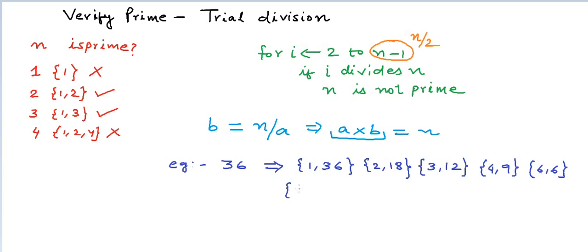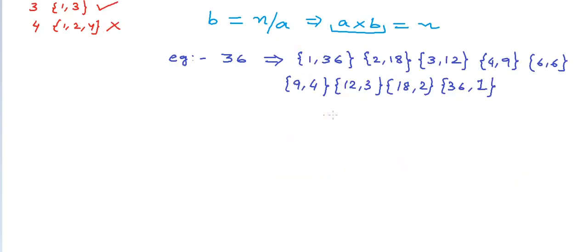Next factor is 9 and the corresponding cofactor is 4. 12 and 3. 18 and 2. And finally 36 and 1.